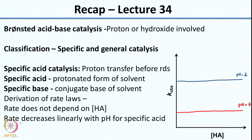If you plot log K versus pH for specific acid catalysis, you see a linear decrease: as pH increases, the K value decreases.